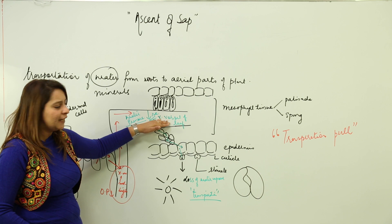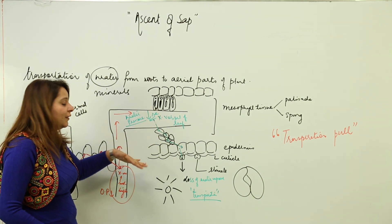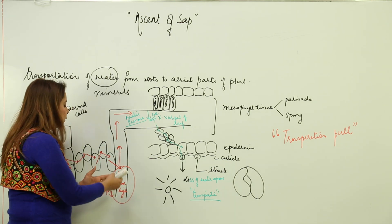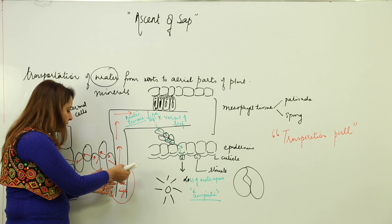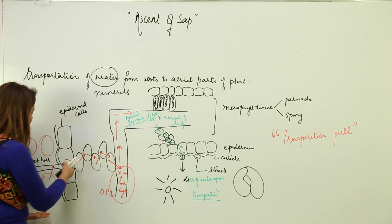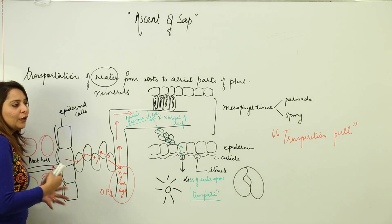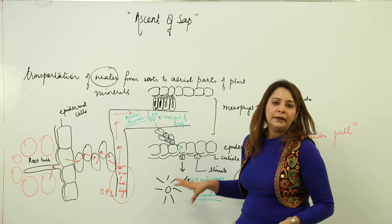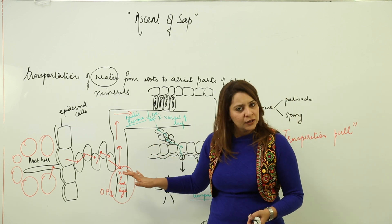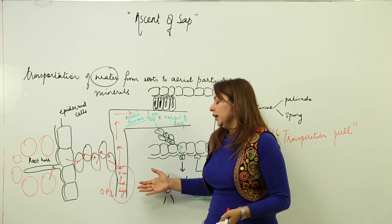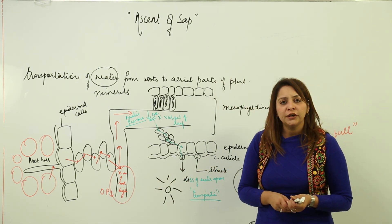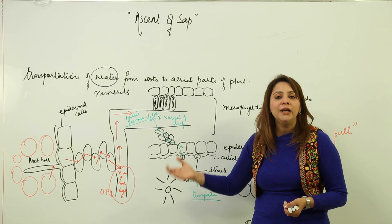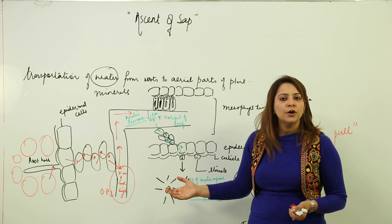The pressure difference creates a suction pump that takes water from the soil and transports it to all aerial plant parts. This is what ascent of sap is — it is responsible for the transportation of water and minerals from the soil to the aerial parts of the plant.